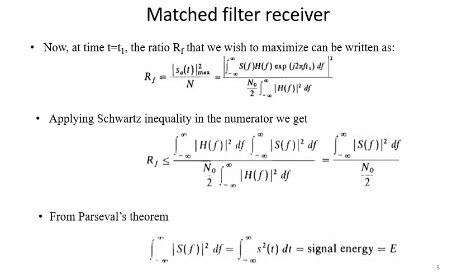Now at time t equal to t_1 the ratio R_f that we wish to maximize can be written as |s_0(t)|²_max divided by N.